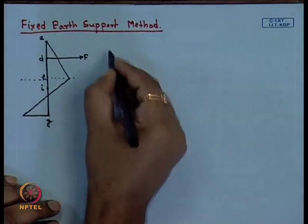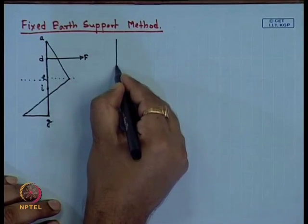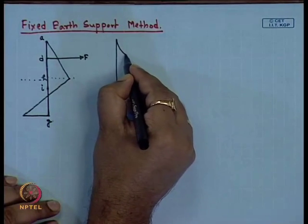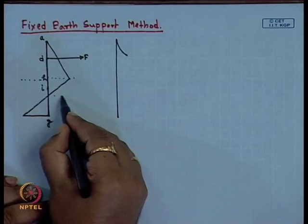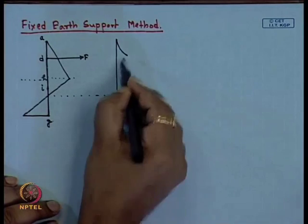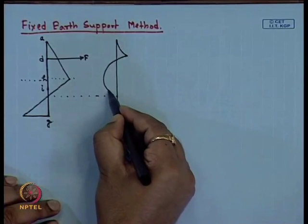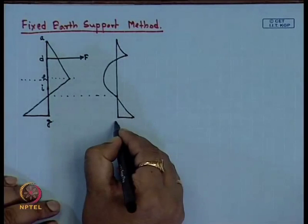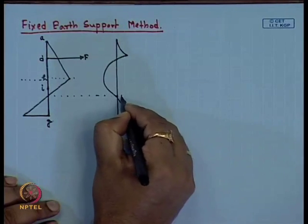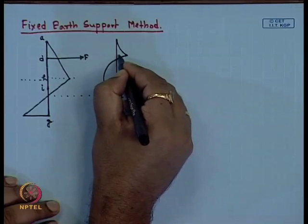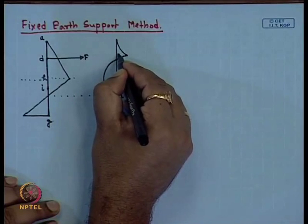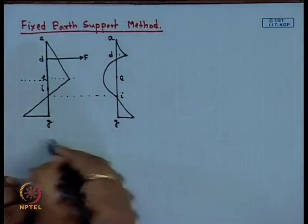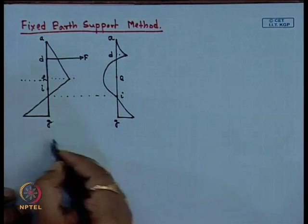Now, if I draw the bending moment diagram of this portion, it is maximum here. At the I point this value is zero. Then it will follow this path — this is G, again this I point, this is E point, and this portion where it is maximum at D point, this is A point. So this is the pressure distribution.